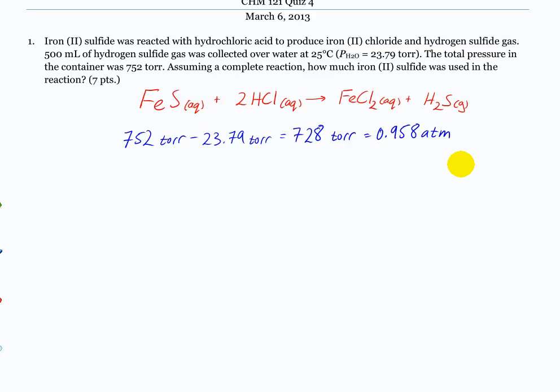So now we've got pressure. We've got volume, 500 mLs. We've got temperature, 25 degrees C, so we can figure out the number of moles of hydrogen sulfide gas collected.